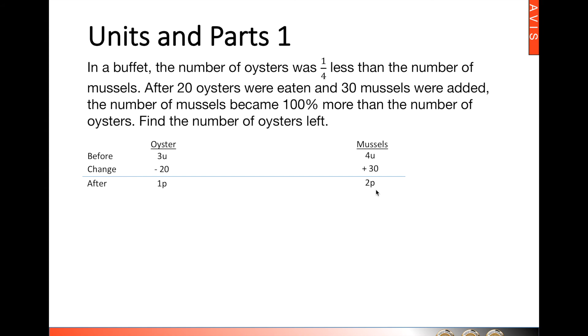For units and parts type 1, the trick is to make the parts the same. So we try to make the oyster from one part to become two parts. For that, we have to multiply by 2. Now something to take note, we have to multiply throughout by 2. That means the 3 units here will then become 6 units, the minus 20 will then become minus 40, and the one part will then become two parts.